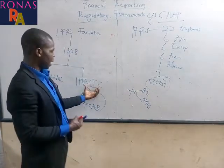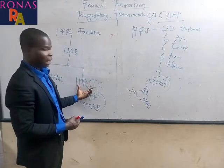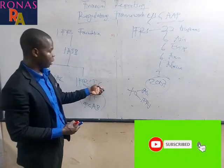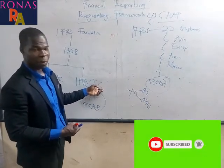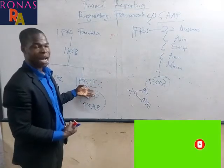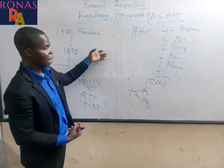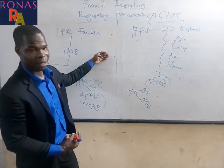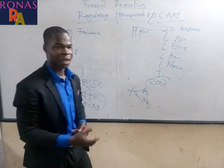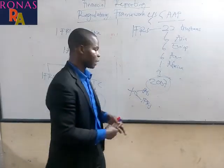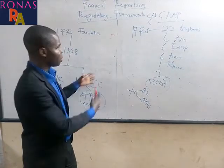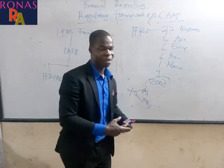The International Financial Reporting Standard Interpretation Committee — as their name suggests, they interpret. We still have some interpretations in the system; for instance, IAS 16 and IAS 19 on employee benefits each come with some kind of interpretation.